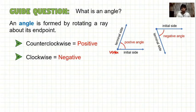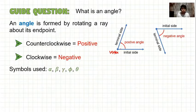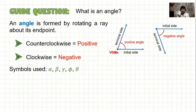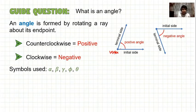To denote an angle, we commonly use Greek letters: alpha, beta, gamma, phi, and theta. There are other Greek letters that can be used to denote an angle, but these are the symbols most commonly used.